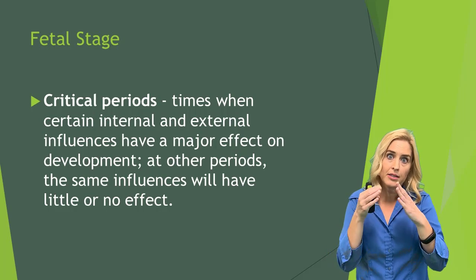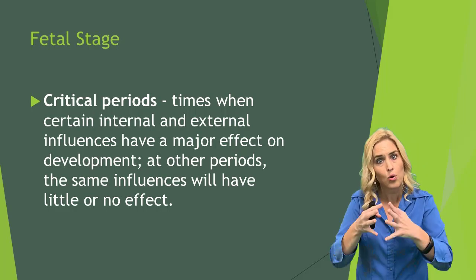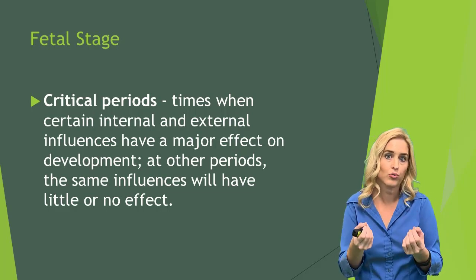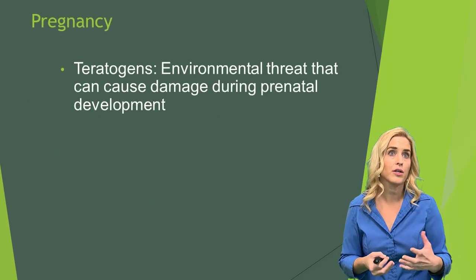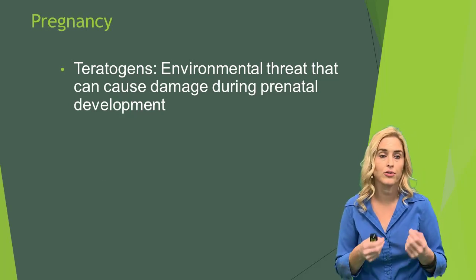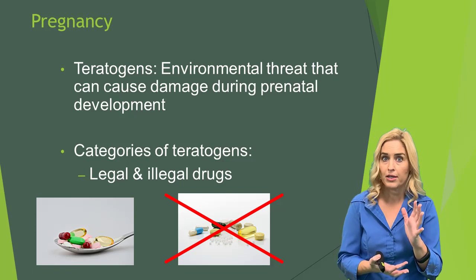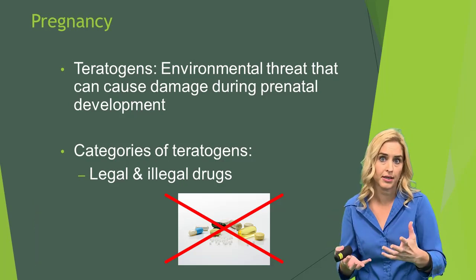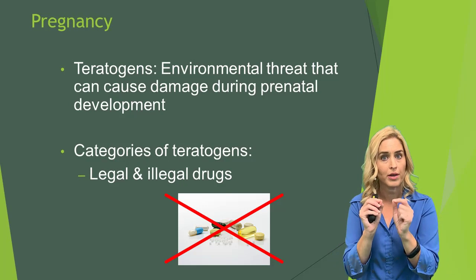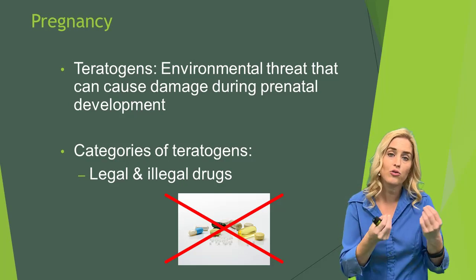Sometimes we can narrow critical periods down very closely because we've been able to do some really good research. Other times, we're not quite sure exactly when that critical period is. This is one of the reasons why we've done so much research on teratogens. Teratogens are environmental threats that can cause damage during prenatal development. Some of the categories of teratogens include legal and illegal drugs. This is why many women are given a list of over-the-counter medications that they can and can't take during their pregnancy, often throughout the entire pregnancy, because we don't always know exactly when that window of time is that it will affect, say, the liver or the heart. Part of that is because there are individual differences in how we grow and develop.